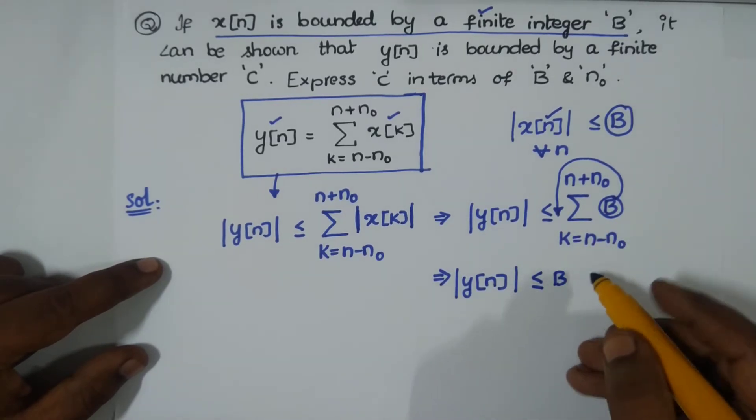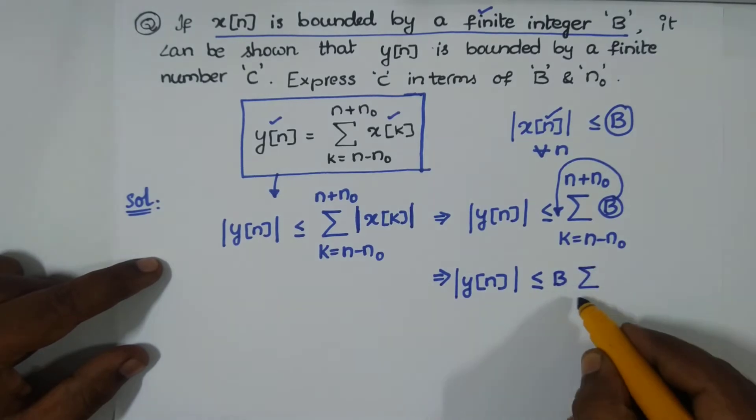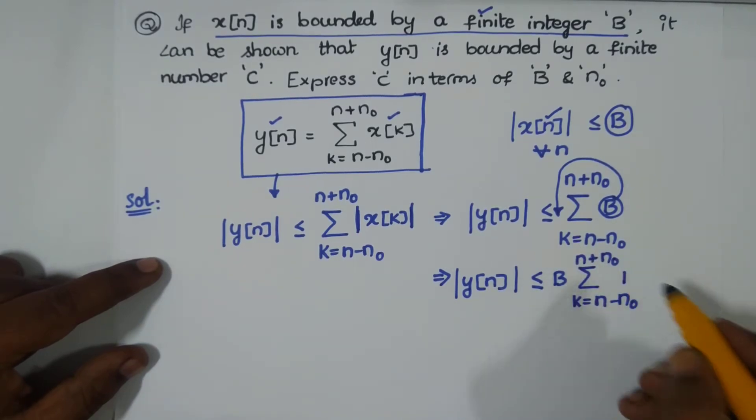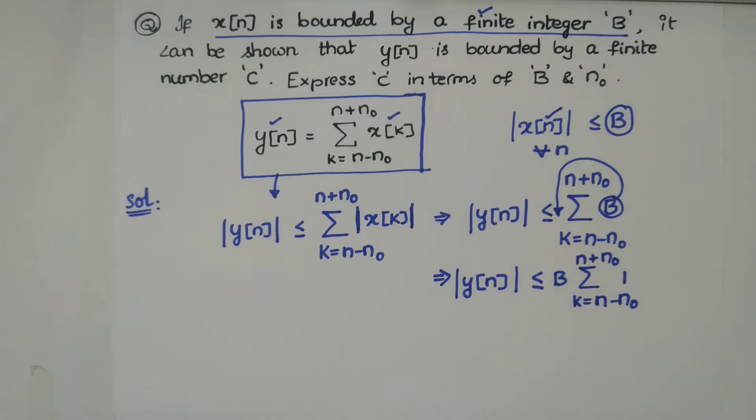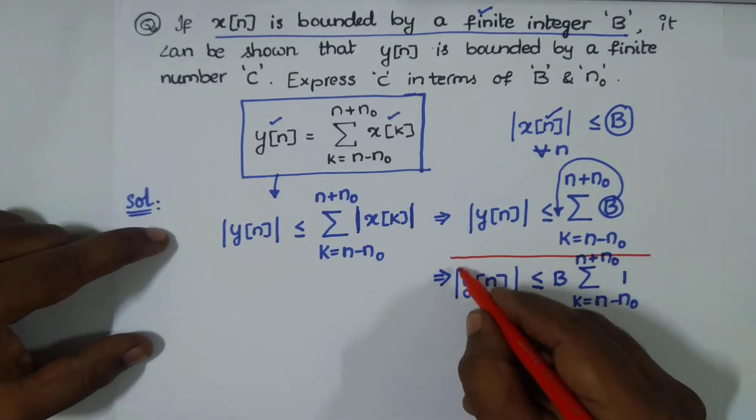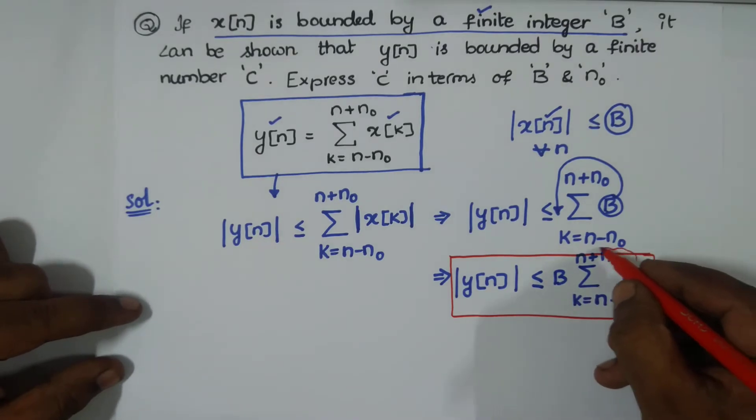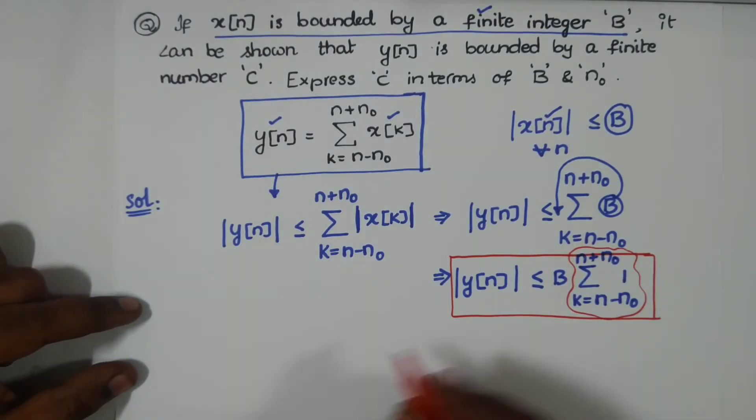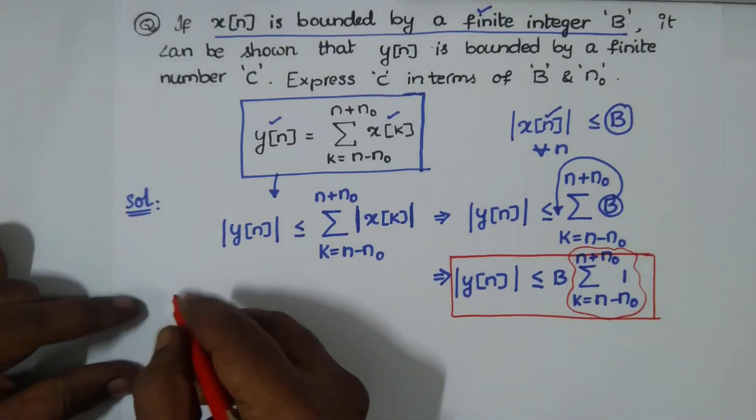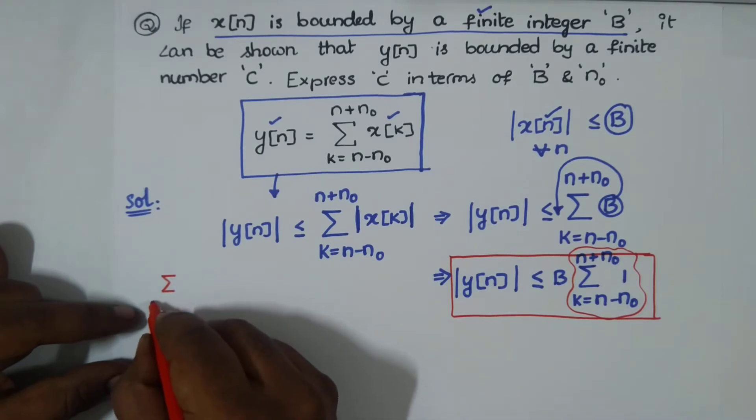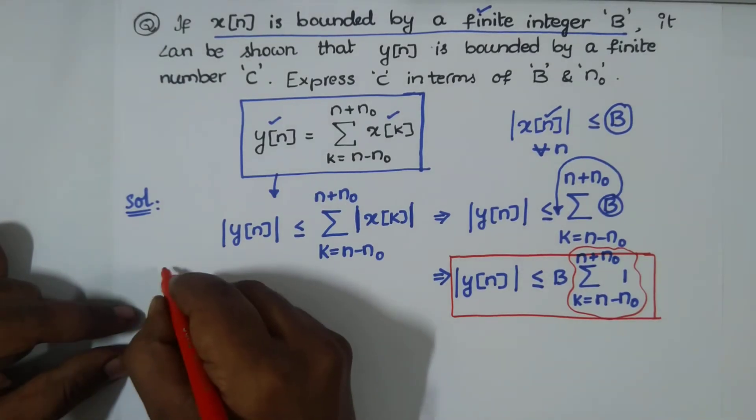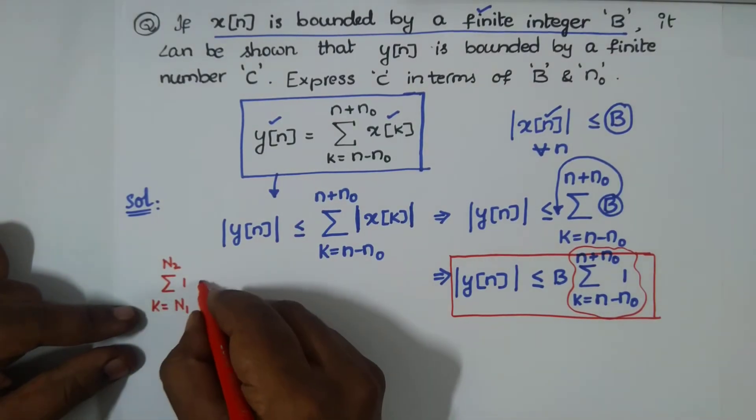Because the limits are running for k, not for B. This B is just a constant, a finite value, so I can bring it out. Now you have k equals n minus n₀ to n plus n₀, summation of 1. Now, some may ponder how to tackle this. This is very simple, there's no big deal. Whenever you have something like this, for example k equals some n₁ to some n₂, summation of 1, you know what to do.